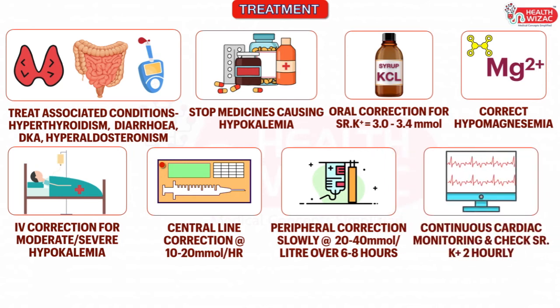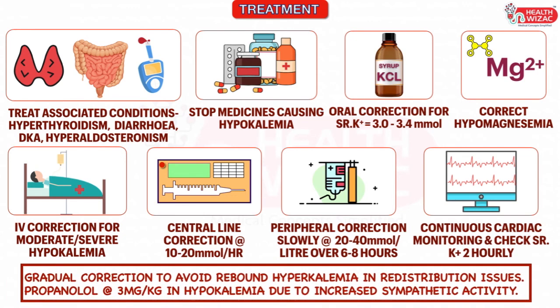While treating patients of hypokalemia through intravenous correction, serum potassium level should be checked every 1 to 2 hours to avoid acute rise in potassium level and risk of arrhythmias. Continuous cardiac monitoring should also be done. While treating hypokalemia associated with redistribution issues, correction should be done gradually to avoid the risk of rebound hyperkalemia.